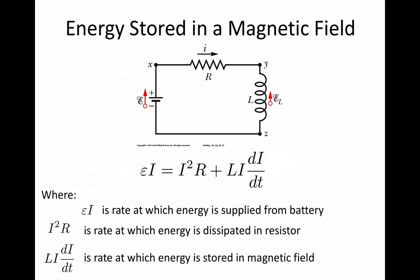going from our equation from the last slide for the potential differences around the circuit, remembering that power equals potential difference times I, we then have that EMF times I equals I squared R in the resistor plus I times L di/dt. So epsilon times I is the rate at which energy is supplied from the battery, I squared R is the rate at which energy is being dissipated in the resistor and that means that L I times di/dt is the rate at which energy is being stored in the magnetic field.